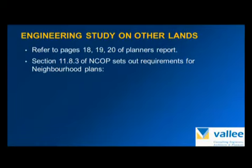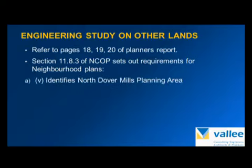That portion of the planning report discusses section 11.8.3 of your Norfolk County Official Plan, which sets out the requirements for neighbourhood plans, and there's an alphabetical list of what's required. Section A, which is discussed on page 18 of the report — in the report it's called section V, but it really should be A, as that's what it's referred to in the Norfolk County Official Plan. Section A identifies the North Dover Mills Planning Area, so this is what's brought us here today.